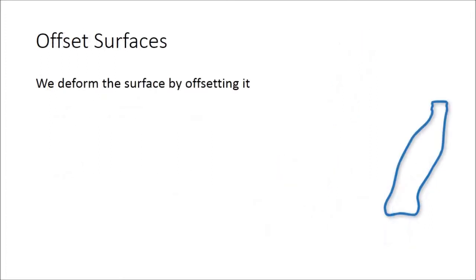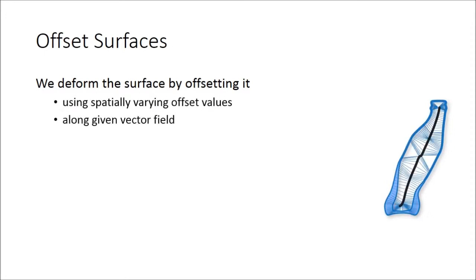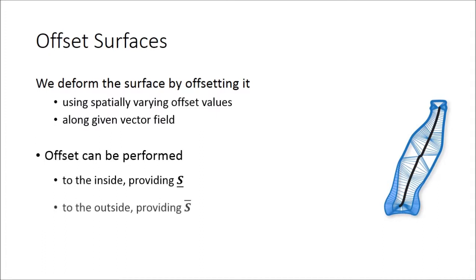We utilize offset surfaces to perform shape deformations. The original surface can be displaced using spatially varying offset values along a given vector field. The offsets can be applied to the inside providing the inner surface, to the outside providing a deformed outer surface, or in both directions.